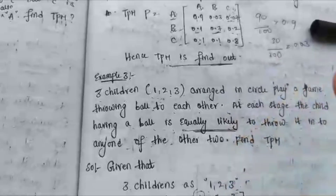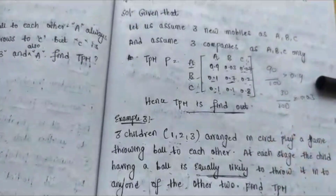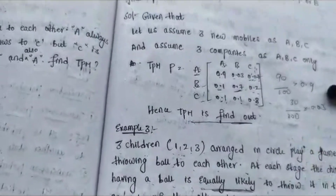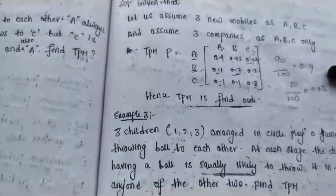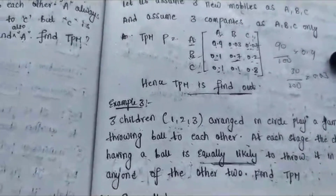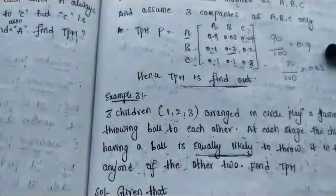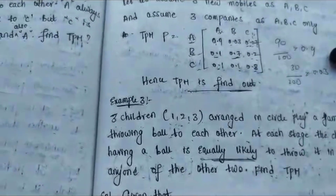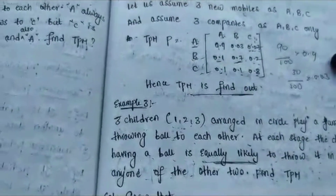The TPM is straightforward once we understand how to write the matrices, the transition probability mathematics, and the main characteristics of a TPM. Hope you enjoyed this video — please like, share, comment, subscribe, and click the bell icon to be notified of every update from the Small Studies YouTube channel. Thank you.